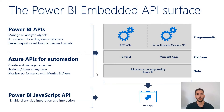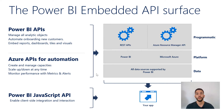The Power BI Embedded API surface has several layers. The Power BI REST APIs let you manage all your analytics objects — get reports, automate onboarding new customers, embed reports and dashboards, and retrieve details. We also have Azure APIs for automation that let you scale capacity up and down, and monitor performance using metrics and alerts — so if memory exceeds a set limit, you can scale accordingly. Finally, the Power BI JavaScript API lets you build client-side integration and interaction, and is used to both embed reports and communicate between the Power BI report and your application.